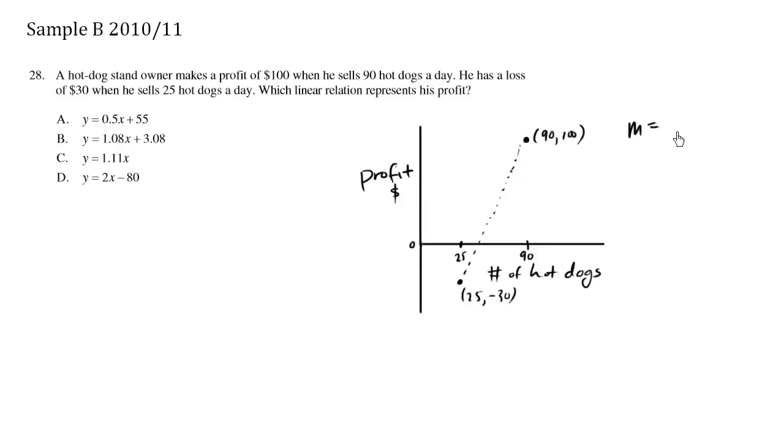Slope equals y2 minus y1 over x2 minus x1, so we'll just make this our x2, y2, we'll make this our x1, y1. So the slope is equal to 100 minus y1 which is negative 30 over x2 which is 90 minus x1 which is 25.